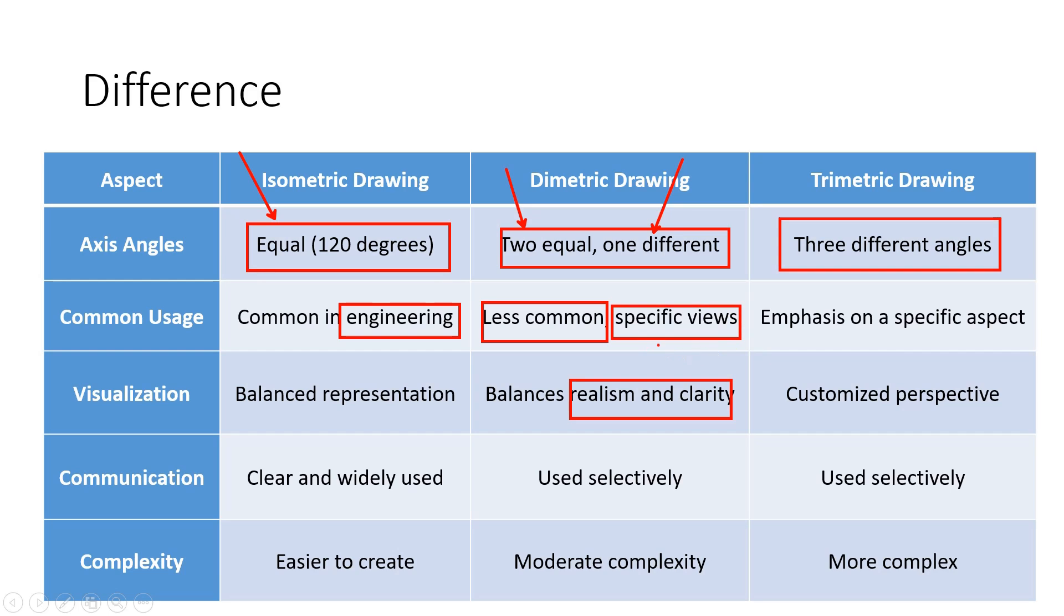Trimetric drawing, the least common, features three different angles for the axes, allowing for a customized perspective that emphasizes particular aspects of the object, enhancing technical communication through pictorial projections.